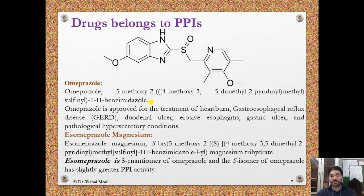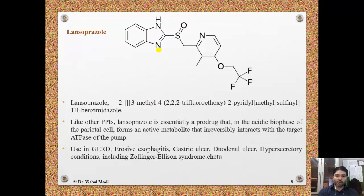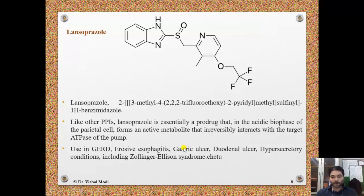The next drug in this group is lansoprazole, which again features a benzimidazole nucleus, sulfoxide connection, and pyridine ring system. Its IUPAC name is 2-[3-methyl-4-(2,2,2-trifluoroethoxy)-2-pyridylmethylsulfinyl]-1H-benzimidazole. Like other proton pump inhibitors, lansoprazole is an essential prodrug that in the acidic environment of the parietal cell forms an active metabolite that irreversibly interacts with the target ATPase of the pump. It is used in GERD, erosive esophagitis, gastric ulcer, duodenal ulcer, and hypersecretory conditions including Zollinger-Ellison syndrome.